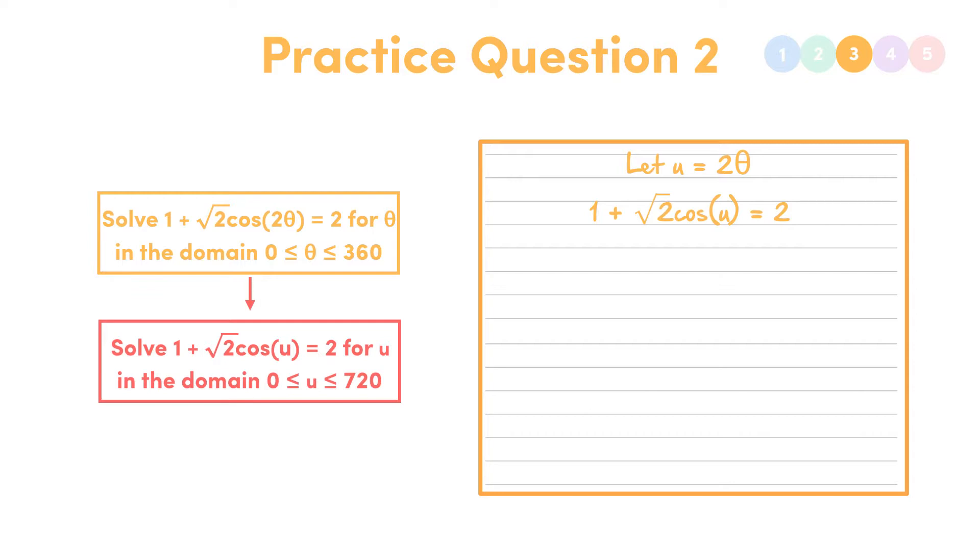So we can simplify this and we get cos u equal to 1 over root 2. Now we can solve this. I'm not going to go through it here because I've got places to be and you've got places to be, but we'll find u equals 45 or 315 degrees.